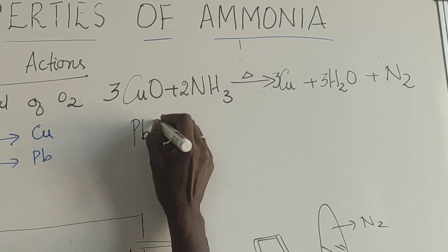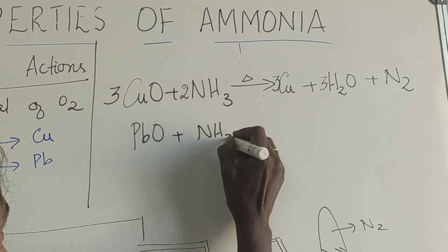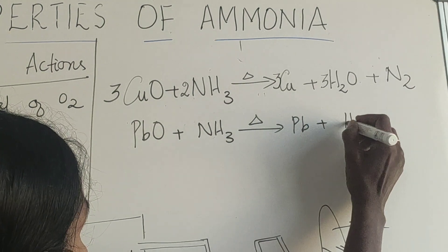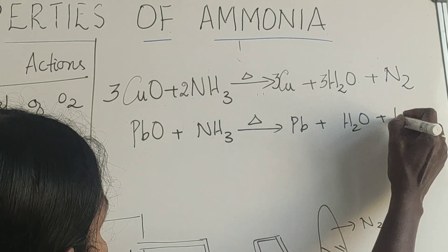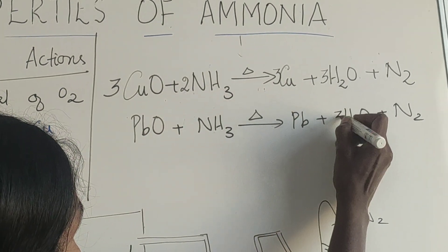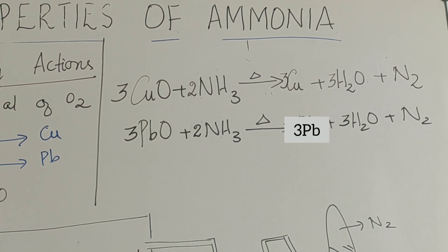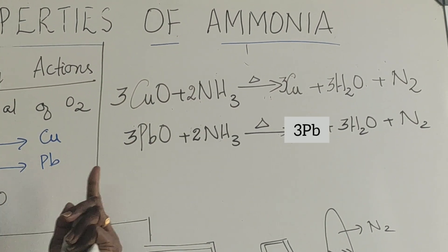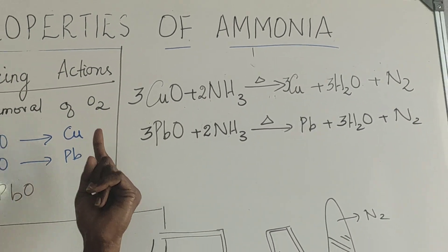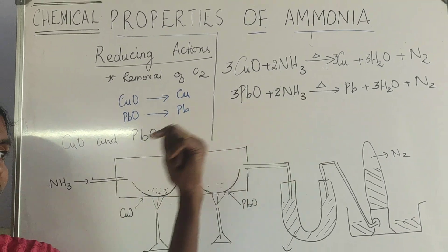Similarly, lead oxide also reacts with ammonia to give lead, plus water, plus nitrogen — balanced as 3PbO, 2NH3, giving 3Pb, 3H2O, and N2. These are the reactions wherein ammonia acts as a reducing agent by removing oxygen from metallic oxides and forming the respective metals.